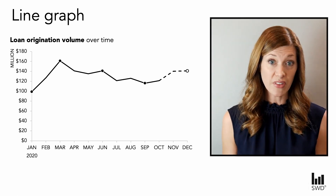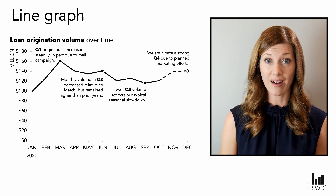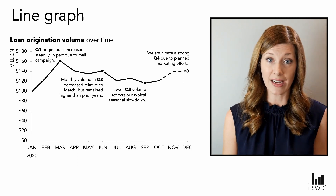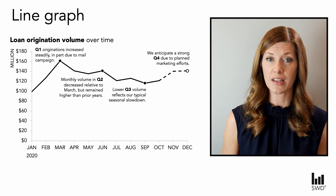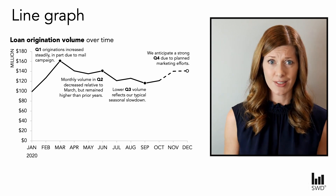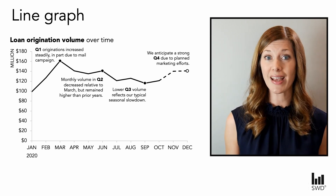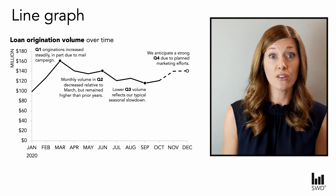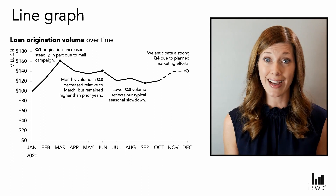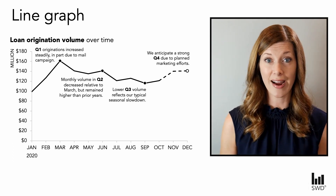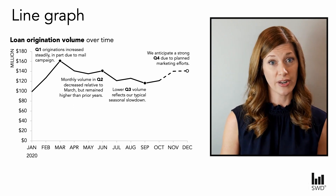I can do something similar for a version that gets sent around, where I annotate those points directly on the graph. That's actually one benefit we get from line graphs: the lines themselves don't take up a ton of space, which means we've got room to add value for our audiences — pointing out interesting things happening in the data or context that might be important for interpreting it.